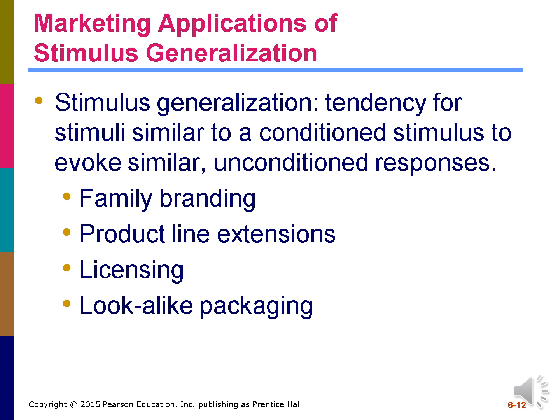The process of stimulus generalization is critical to branding and packaging decisions that try to capitalize on consumers' positive associations with an existing brand or company name. Marketers can base some strategies on stimulus generalization. Family branding enables products to capitalize on the reputation of a company name. Marketers can use product line extensions by adding related products to an established brand. Licensing allows companies to rent well-known names. Distinctive packaging designs create strong associations with a particular brand. Companies that make generic or private label brands often exploit this linkage when they put their products in similar packages to those of popular brands.